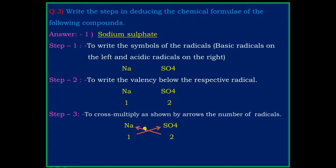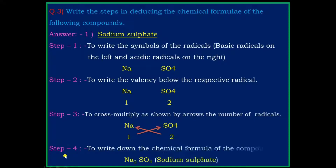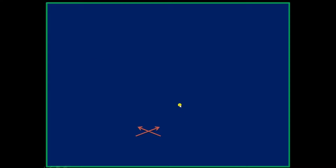Show the arrow for the cross multiplication. Step 4: write down the chemical formula of the compound. The formula is Na₂SO₄ — sodium sulphate.